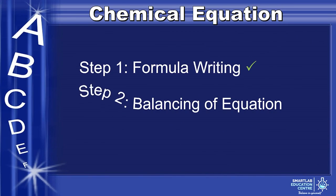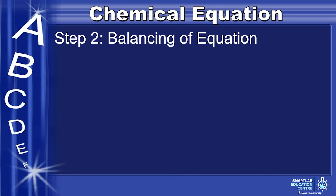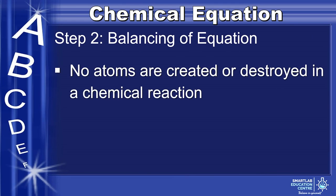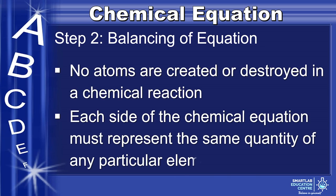Step 2 of writing the chemical equation is balancing. No atoms are created or destroyed in a chemical reaction. Each side of the chemical equation must represent the same quantity of any particular element.